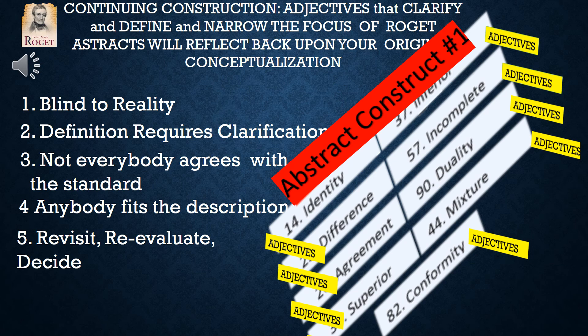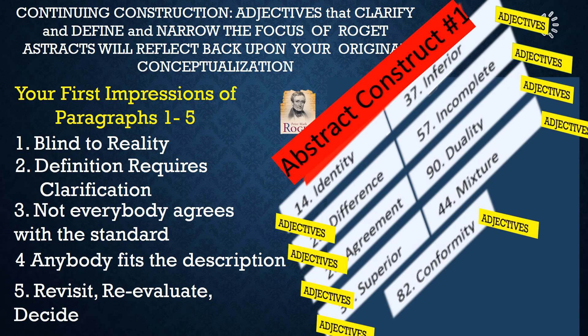We're not done yet. As we continue to build our framework of interrelated abstract concepts, we go back to our original reaction to the reading that we had. You see here: blind to reality, definition requires clarification, etc. And then we bring in again the abstract concepts and the adjectives together. What you'll find is that the adjectives generated by Roger's concepts, together with the adjectives, will reflect back and jump back over to reflect upon your original conceptualization from the critical reading.